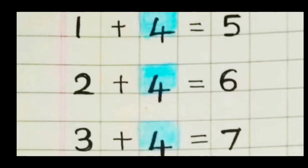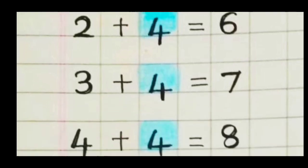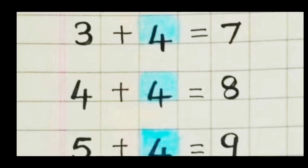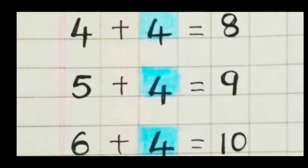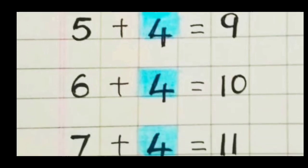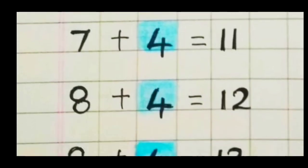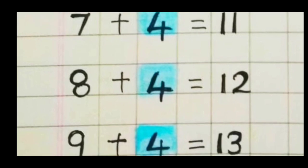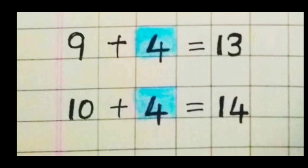Step two — we can say a little more faster. One plus four is five. Two plus four is six. Three plus four is seven. Four plus four is eight. Five plus four is nine. Six plus four is ten. Seven plus four is eleven. Eight plus four is twelve. Nine plus four is thirteen. Ten plus four is fourteen.